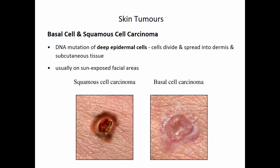The thing that usually causes the DNA to mutate is UV radiation. So usually these types of tumors occur on sun-exposed parts of the body — face, particularly nose, cheeks, maybe shoulders, etc. Basal cell carcinoma is relatively slow-growing and metastasizes fairly slowly, so there's a 99% cure rate if the lesion is removed surgically.